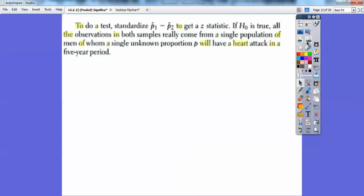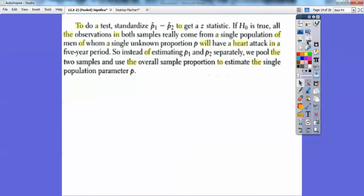Everything's the same. We just got a new formula. To do a test, standardize P hat 1 minus P hat 2, we're going to get a Z statistic. Remember, anything with proportions are always Z statistics. So if your null hypothesis is true, then the observations in both samples really come from a single population of all men of whom single unknown proportion P will have heart attacks in the five-year period. So instead of estimating separately the first proportion and the second proportion, we're going to pool the two samples together and use the overall sample proportion to estimate the single population parameter P.